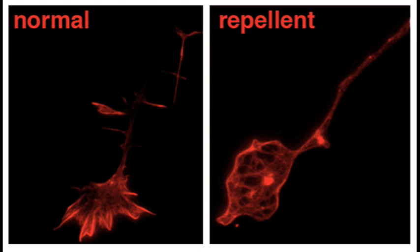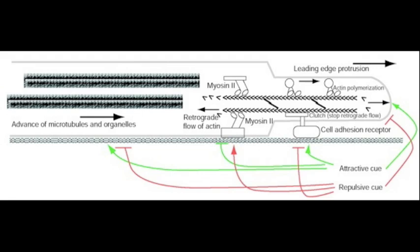When a repellent is added to the medium that bathes responsive neurons, as seen in the right panel, actin filaments and growth cones are disassembled and disrupted compared to the left. Thus, positive and negative guidance molecules work in opposite ways to keep navigating growth cones on the proper pathways to their synaptic targets.